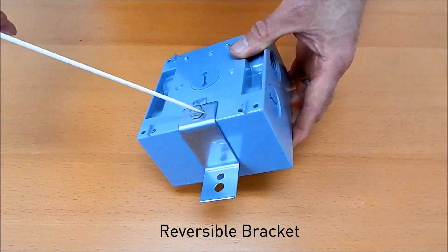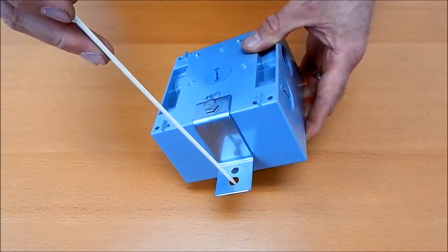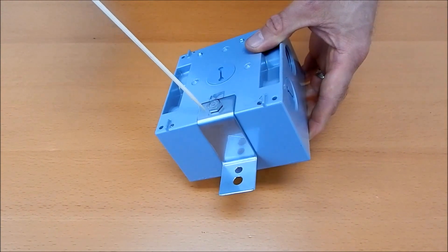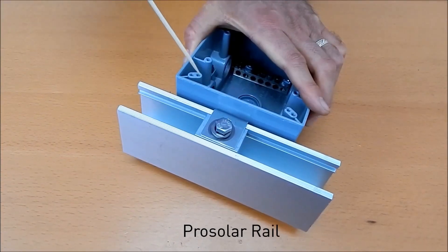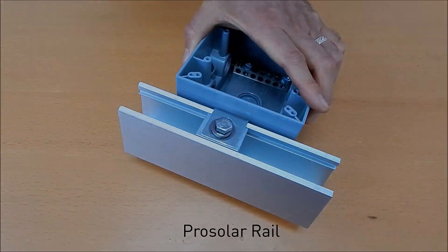The bracket's reversible, and so here it's shown in the reverse position where we've actually got a larger hole, and that's made to accommodate the Pro Solar rail. Here it is with the bracket attached to the Pro Solar rail, 3-8 bolt, and you're good to go.